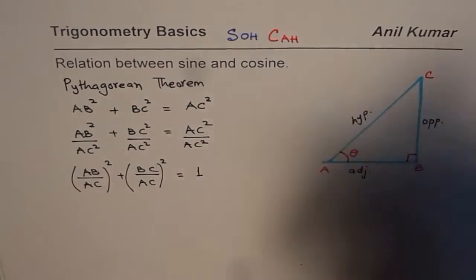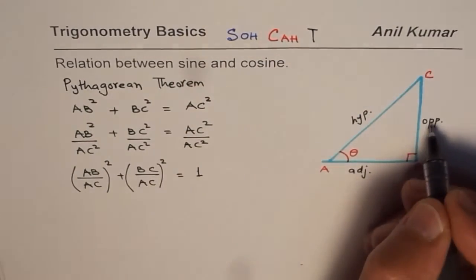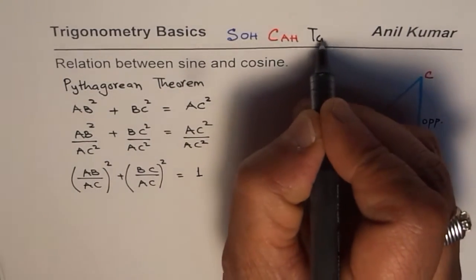Cosine is the ratio of adjacent over hypotenuse. And tangent is the ratio of opposite over adjacent.